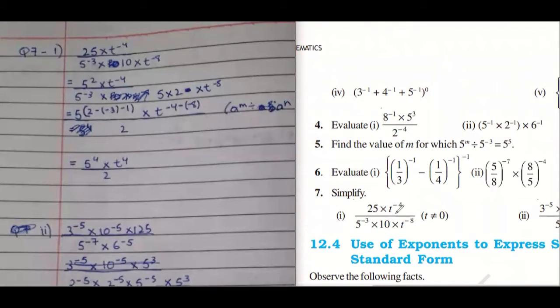Question number 7: 25 into t power minus 4 upon 5 power minus 3 multiplied by 10 multiplied by t power minus 8.